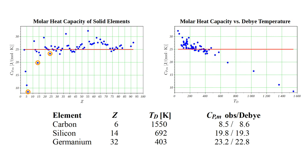And for germanium, with a Debye temperature of 403, observed heat capacity of 23.3, and a Debye model value of 22.8.